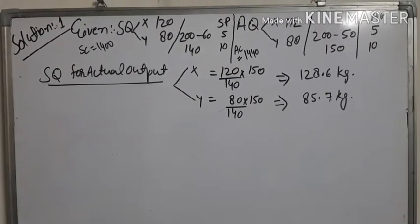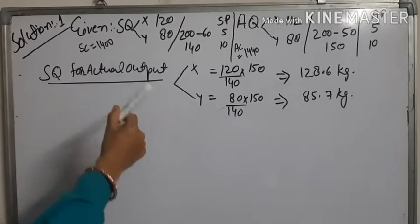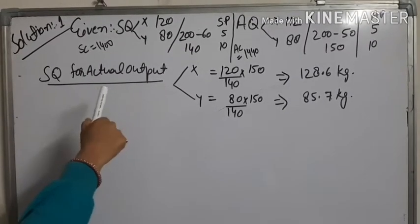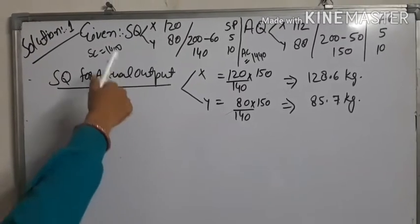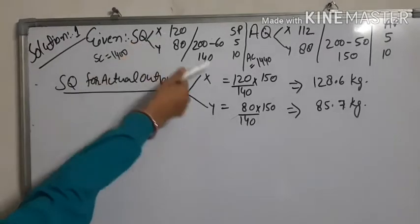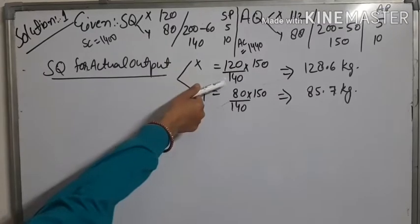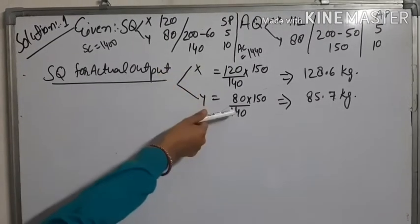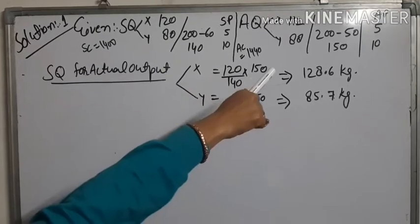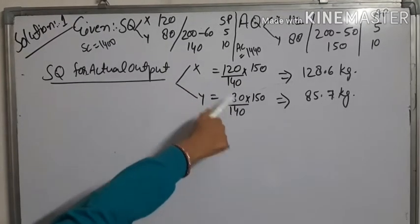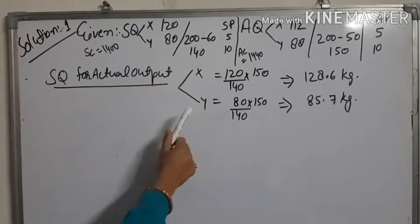For the solution, we first calculate standard quantity for actual output for material X and Y. The formula is: standard mix for each product — 120 for X and 80 for Y — divided by standard yield or output (140 for both), multiplied by actual yield or output (150 for both). Then we calculate standard quantity for actual output for X and Y.